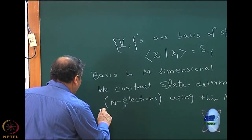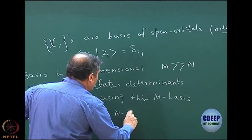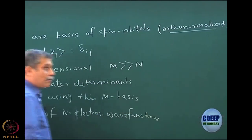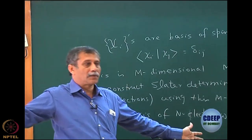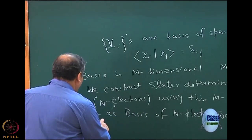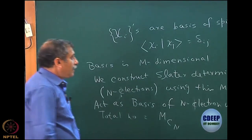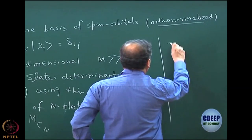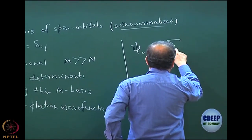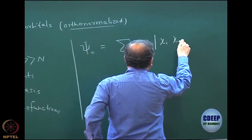These Slater determinants act as a basis for the n-particle or n-electron wave function, just as spin orbitals are a basis for a one-particle wave function — any one-particle function can be expanded in terms of this basis. These determinants now become the basis for the n-electron wave function. The total number of determinants you can compute is mCn. I can write my n-electron wave function psi_0 as a linear combination of all these mCn determinants, like chi_i, chi_j, chi_k, etc., where i < j < k < l, with coefficients d_{ijk...}.